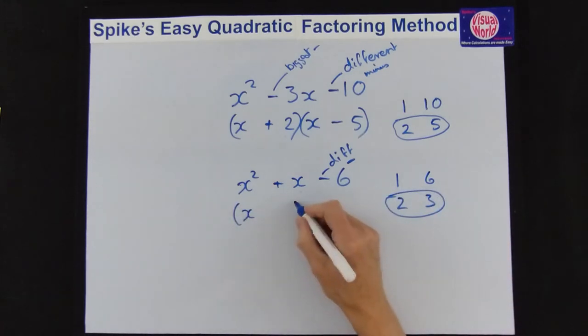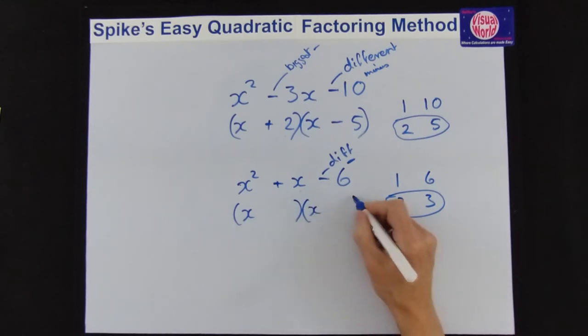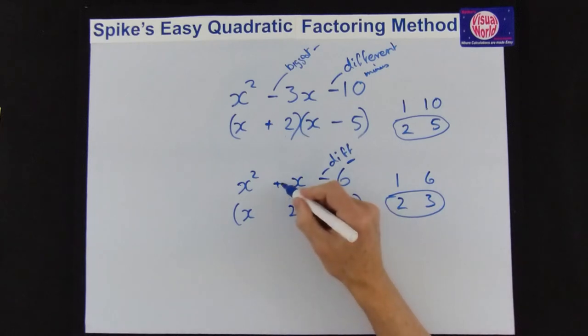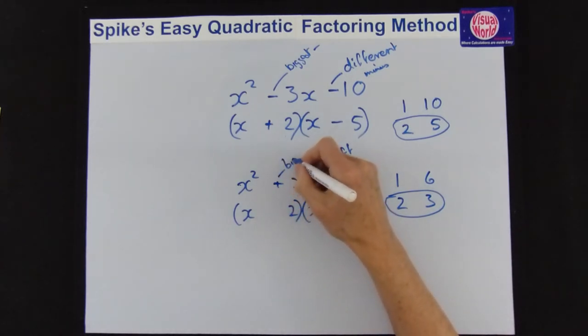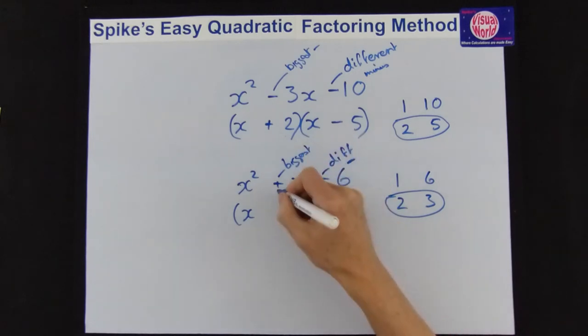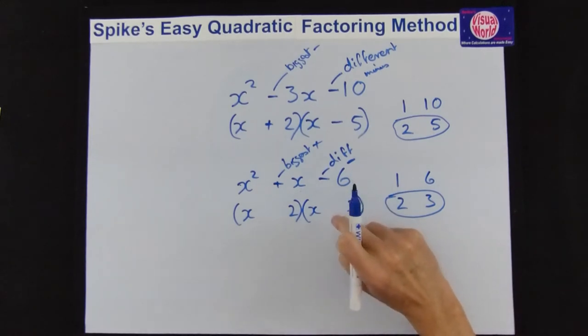So all we do is put x, x, and we've got 2 and 3. This time it comes to plus 1, so it means your biggest must be that sign which is plus. Which one is the biggest? The biggest one is the second one, so that must be the plus. And that is it, factorised.